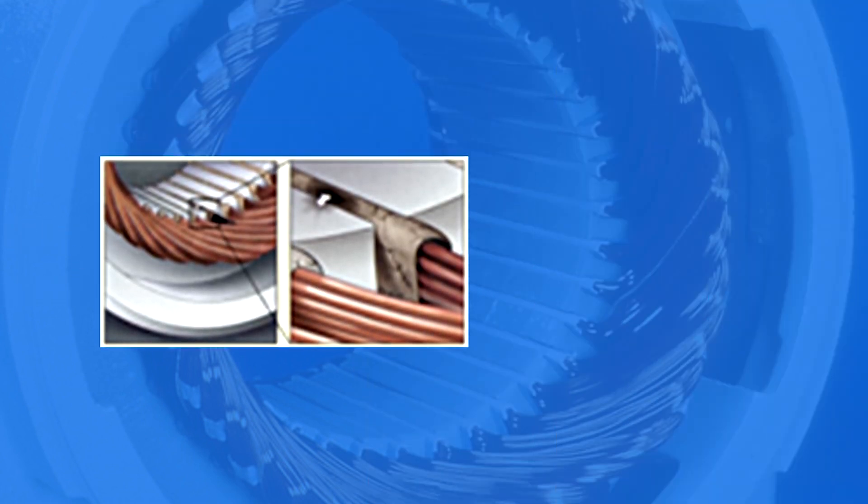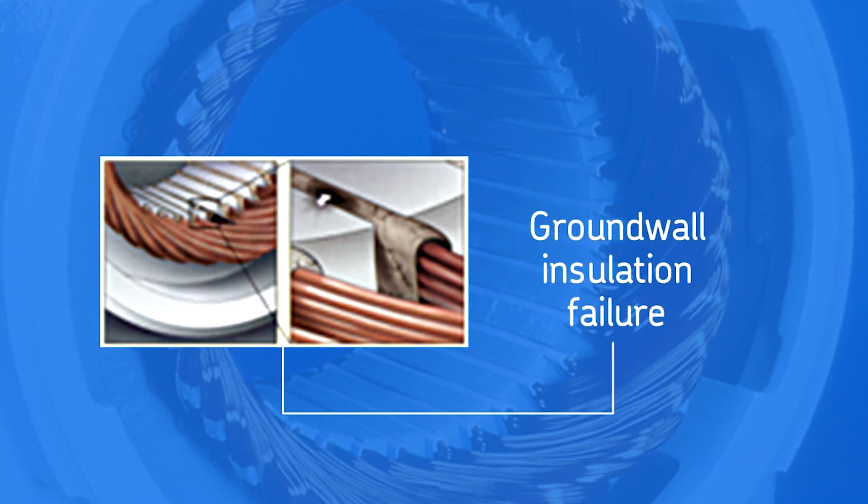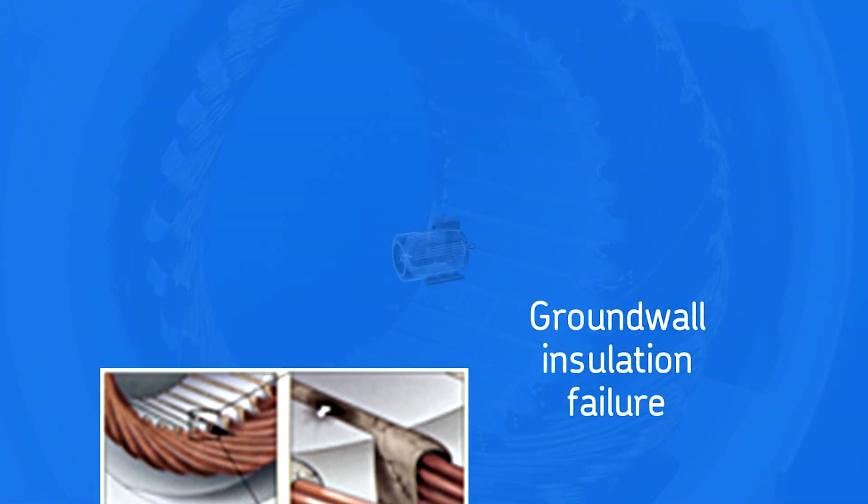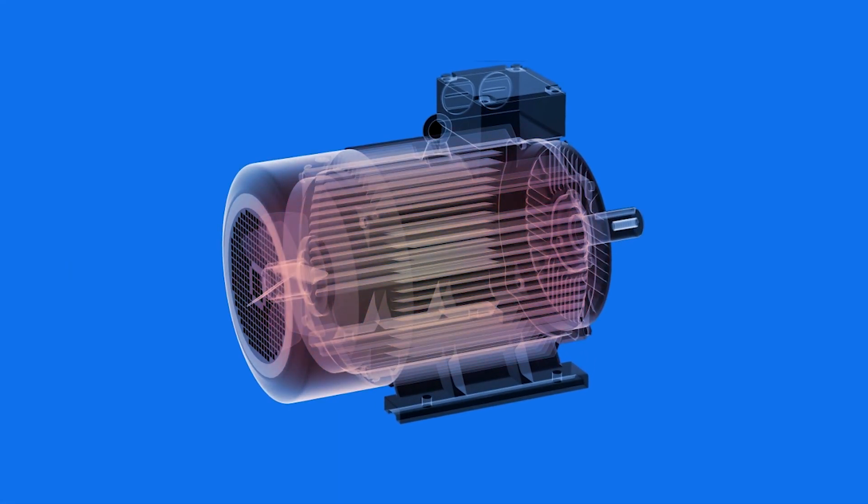When the insulation fails and there is a path to the core, it is called a ground-wall insulation failure since the stator core is at electrical ground. Often, when a motor overheats or has a turn-to-turn failure, the excessive heat will cause a ground-wall insulation failure also.